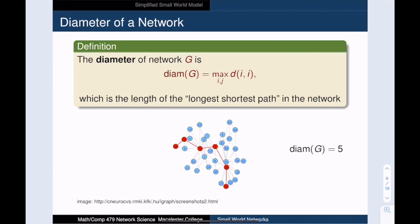Next, we define the diameter of the network. Intuitively, this is the farthest distance between two vertices in the network. In other words, the diameter is the longest shortest path. This example network has diameter five. This is Zachary's Karate Club, which we talked about in our video on community detection.